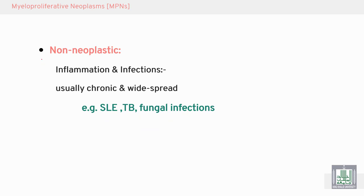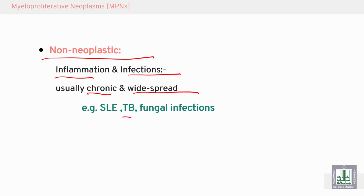Non-neoplastic causes include inflammation or infection — chronic widespread infection of the marrow such as TB, fungal infections, or immunological conditions like lupus and systemic lupus erythematosus. All of these can lead to marrow failure.